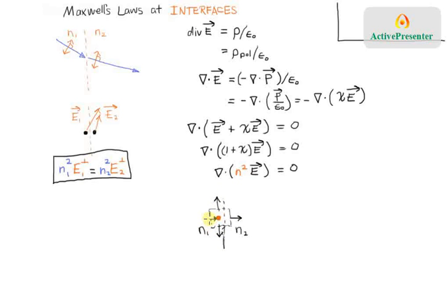What's got to be equal on the left and the right if I make this box arbitrarily small but still cross the boundary is that N1 squared E_X on the left has got to equal